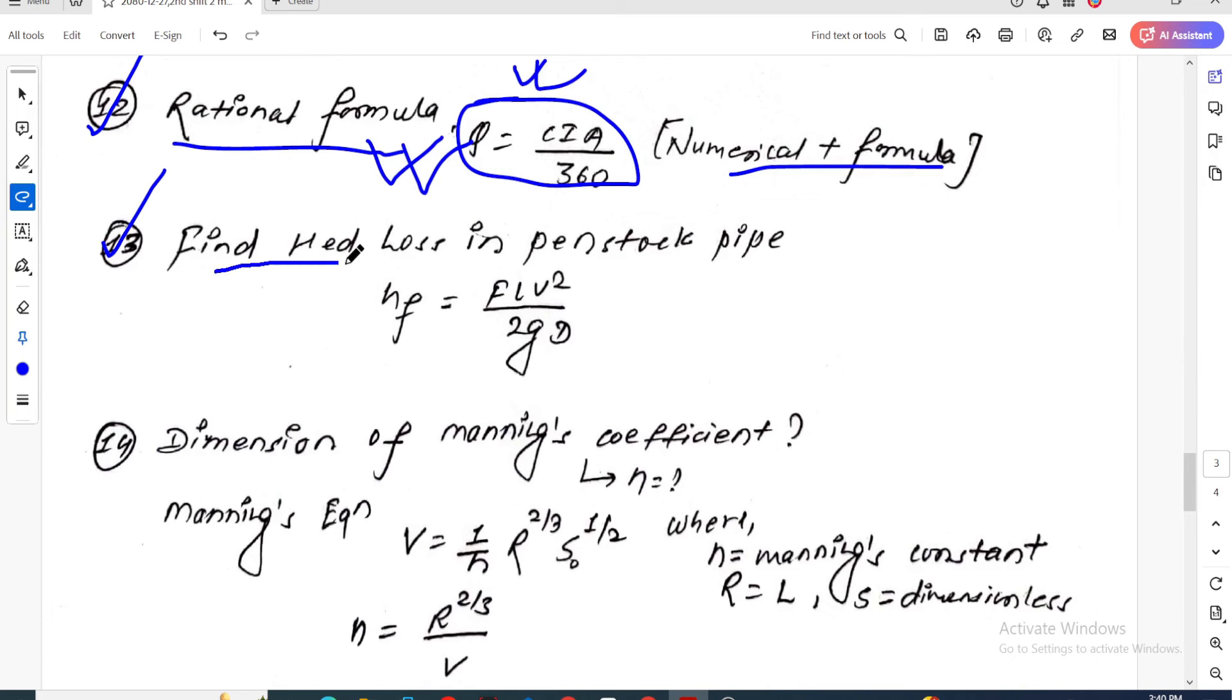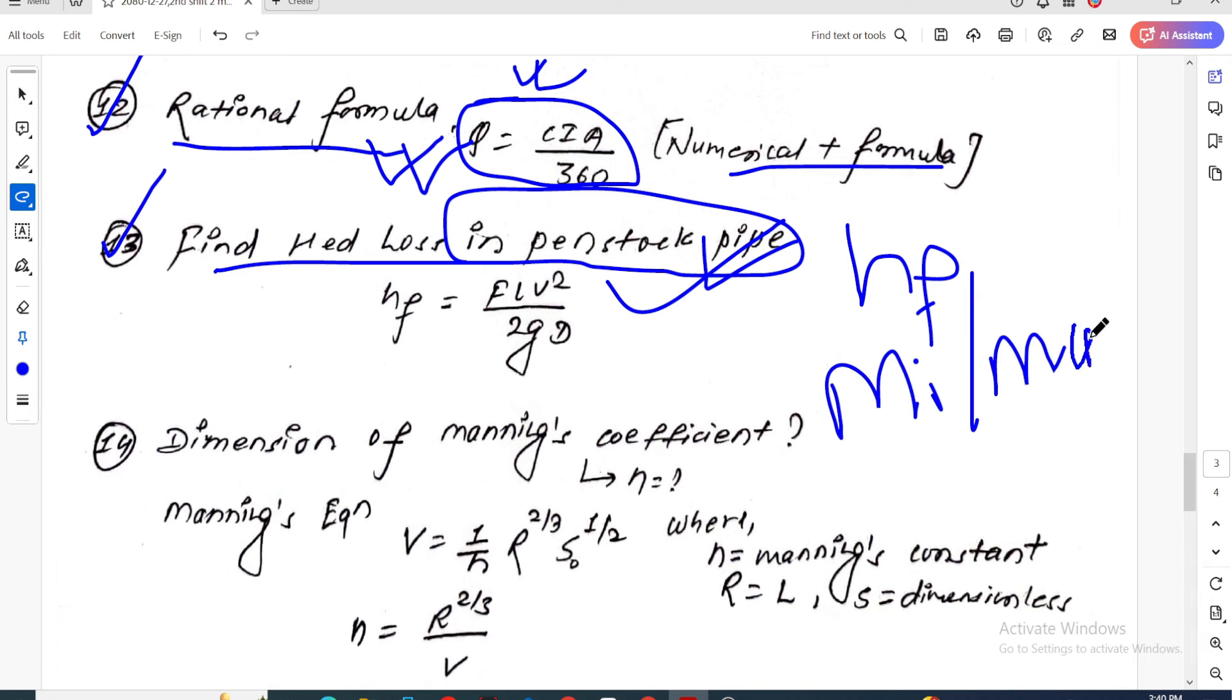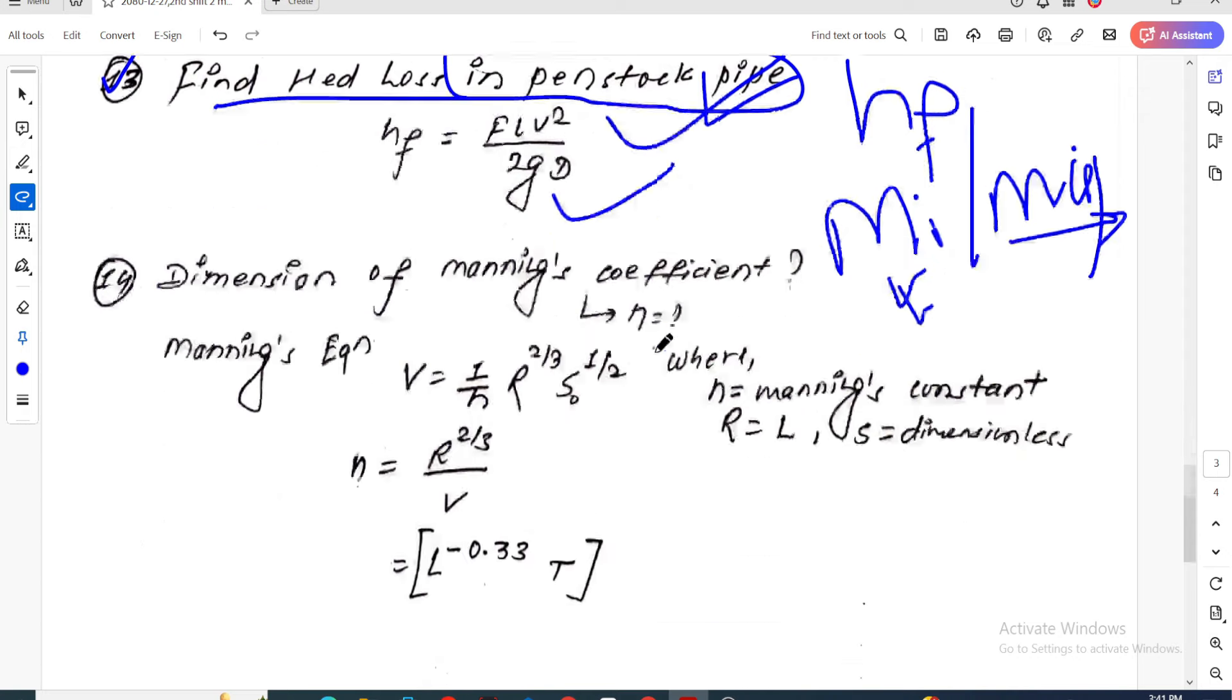Question thirteen: Find the head loss in the penstock pipe. Head loss in penstock can be HF or HLG. The formula accounts for both minor head loss and major head loss.